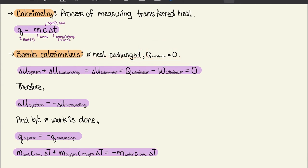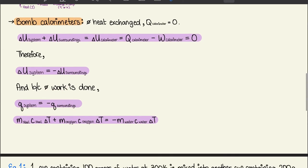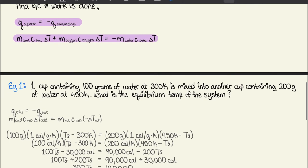For bomb calorimeters there is no heat exchange, so q = 0. The equation gives: ΔU_system + ΔU_surroundings = q_calorimeter - w_calorimeter = 0. Simplified: ΔU_system = -ΔU_surroundings, and because no work is done, q_system = -q_surroundings. We can expand both sides using the q = mcΔT equation.